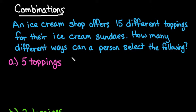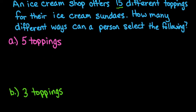What we have here is an ice cream shop that offers 15 different toppings for their ice cream sundaes. How many different ways can a person select the following? We're going to look at five toppings and then at three toppings.